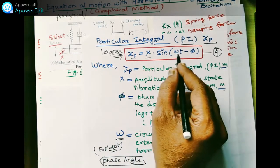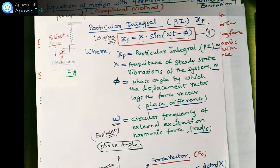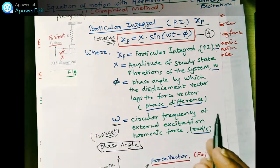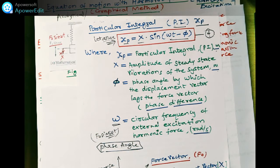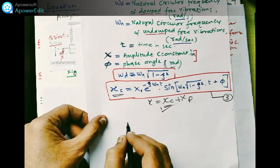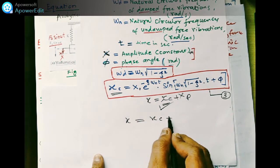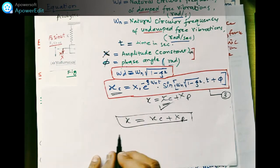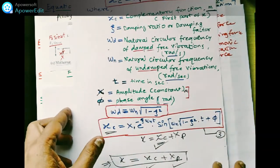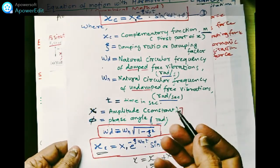So we have equation three for xc and equation four for xp, and now we can get the total answer x = xc + xp. We will solve this using both the analytical method and the graphical method in the next videos. Please watch my videos, and if you are not subscribed to Kadam Academy, please subscribe for more interesting videos. Thank you very much.